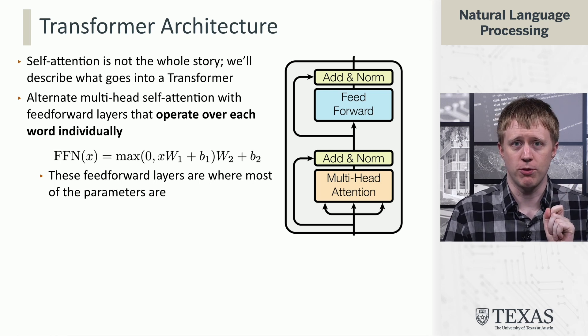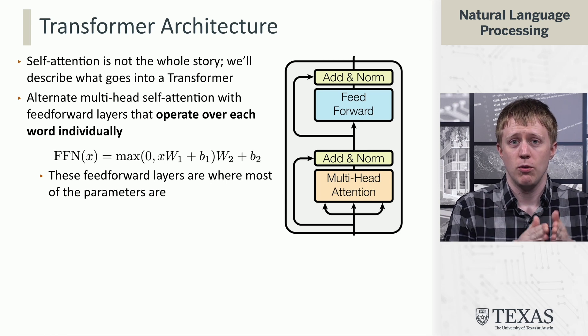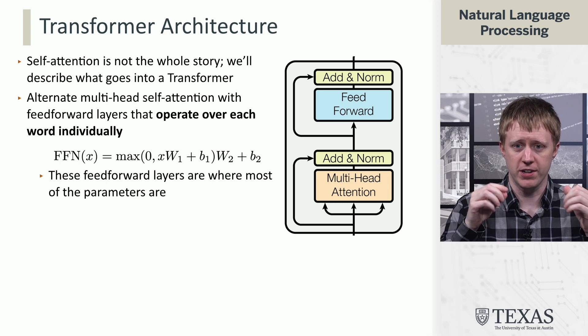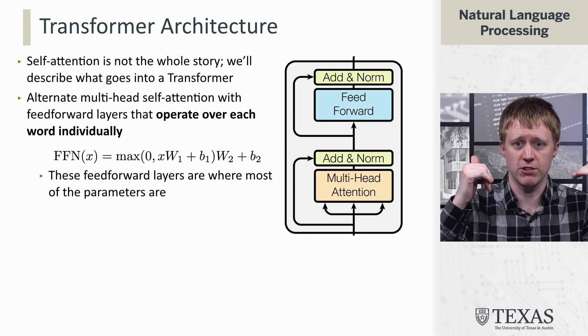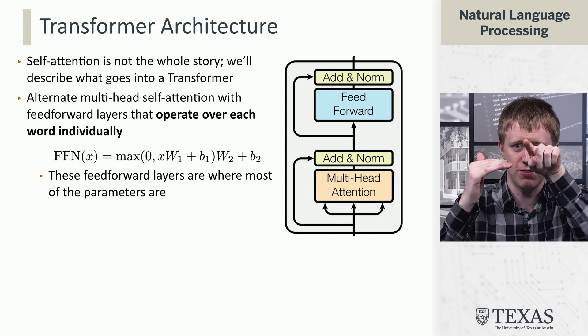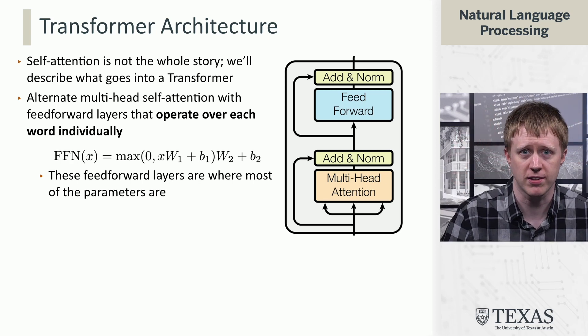We've talked a lot about feed-forward neural nets for language modeling, and this is something a little bit different. If we have three words as input to our multi-head attention, our multi-head attention is going to have all those look at each other and produce three vectors as output, then each of those three vectors independently gets this feed-forward network run over it to produce three new vectors that are outputs from that process.